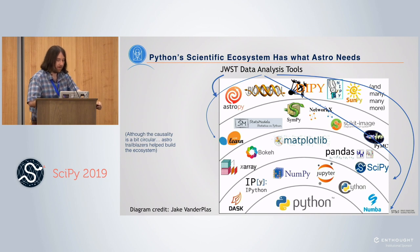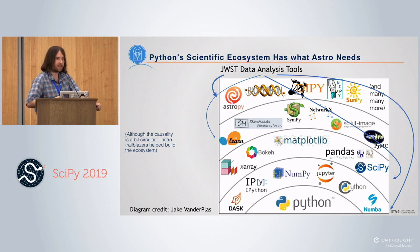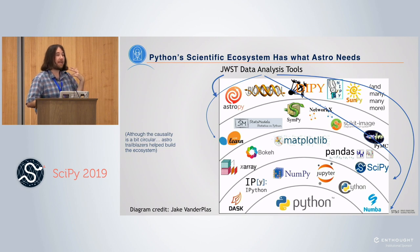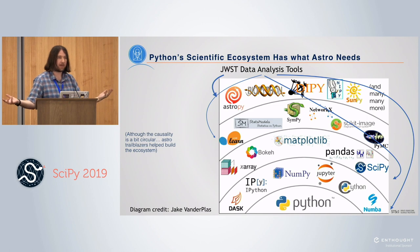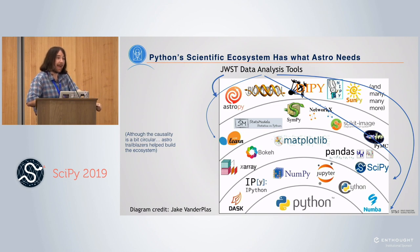The causality here is a bit circular: ahead-of-the-curve astronomers were actively involved in developing some of this ecosystem — Space Telescope was actually involved in helping develop some of the precursors to NumPy. But it wasn't mainstream until this ecosystem was developed as a team effort. And it's this scientific Python ecosystem that the JWST data analysis tools are built on, at different levels — some layers used much more than others.